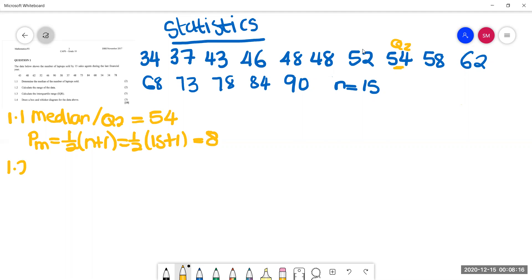Then 1.2 says calculate the range of the data. The range is maximum minus minimum, which is the largest minus the smallest. That gives us 56.